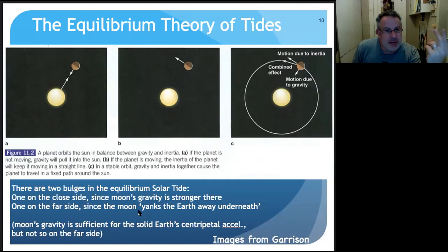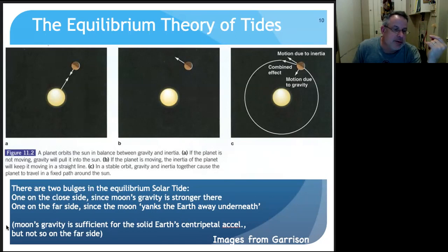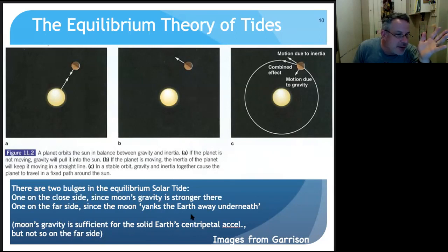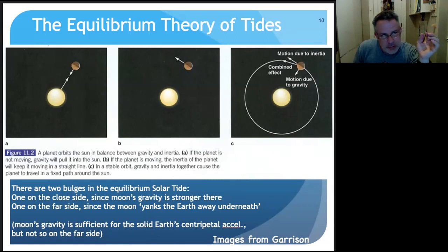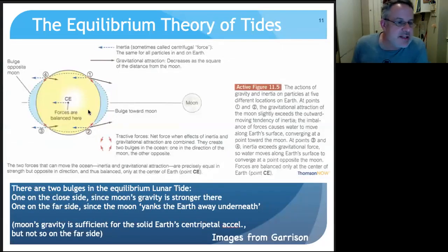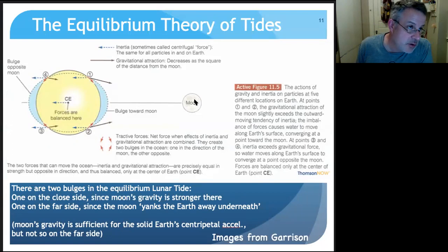So there are two bulges in the equilibrium solar tide — one on the near side, since the Moon's gravity is stronger there, and one on the far side, since the Moon yanks the Earth away underneath. The Moon's gravity is sufficient for the solid Earth's centripetal acceleration — essentially the centrifugal force, not rotating with the frame of reference. The difference between the Moon and the Sun is which direction the tide is pointing, and also that the period is a little different because the solar day and the lunar day are slightly different, since the Moon is moving substantially each solar day.